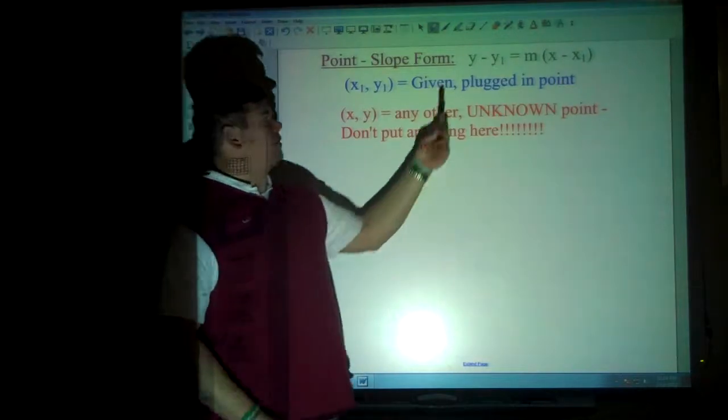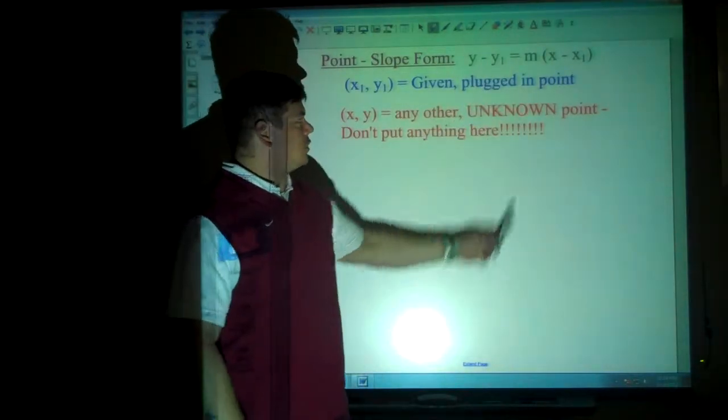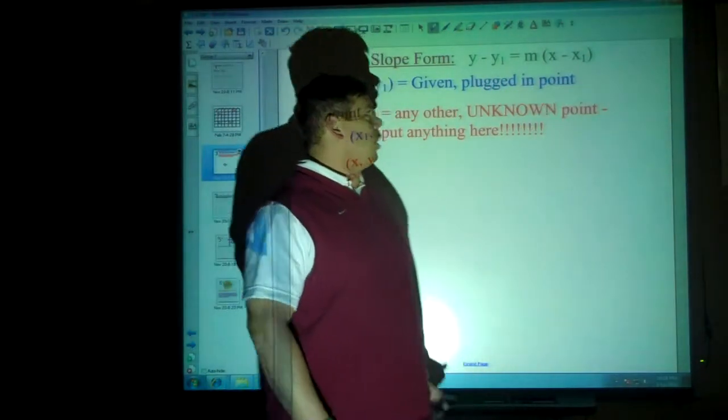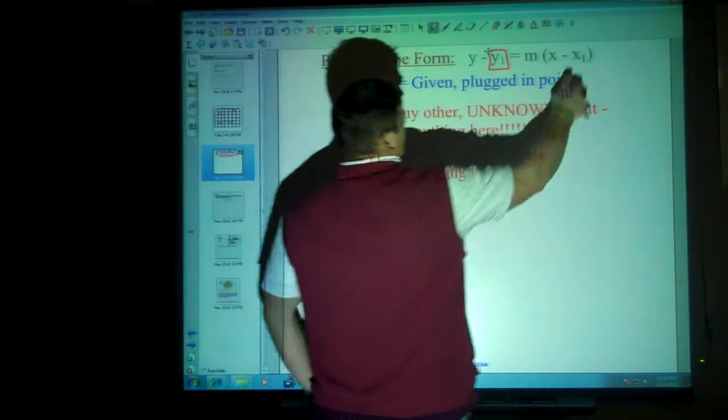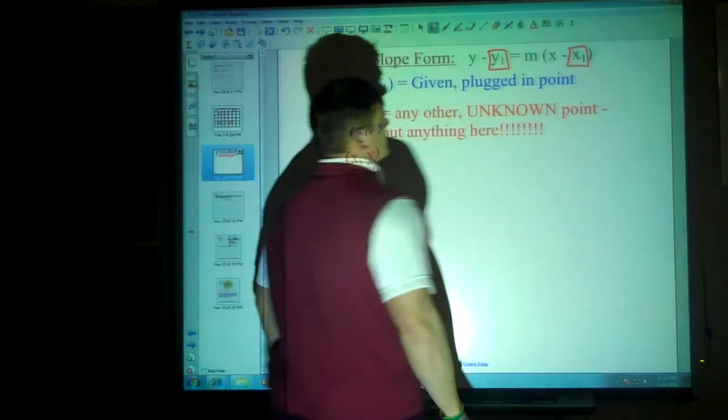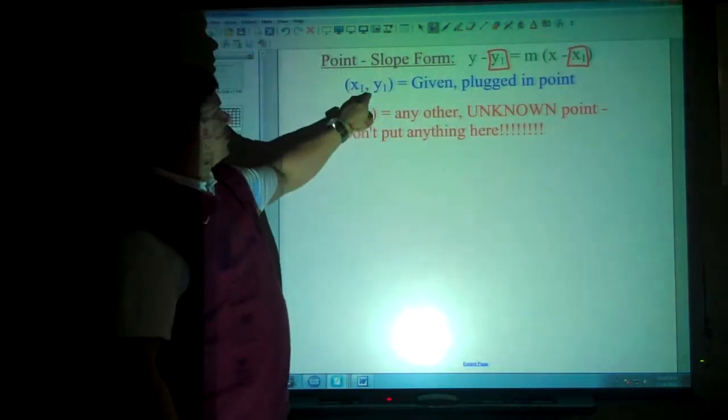So just a reminder, in point slope form we've got y minus y sub 1 is equal to the slope times x minus x sub 1. We are going to be placing values in for the y sub 1 and the x sub 1 because we'll be given a coordinate. That's the point that we're given.